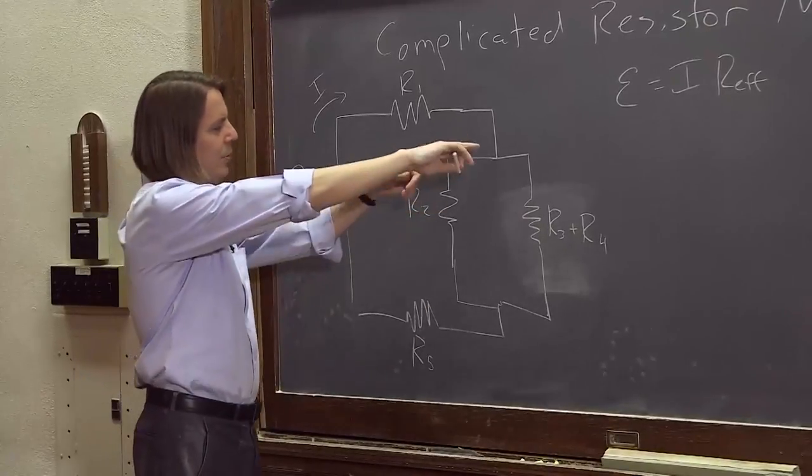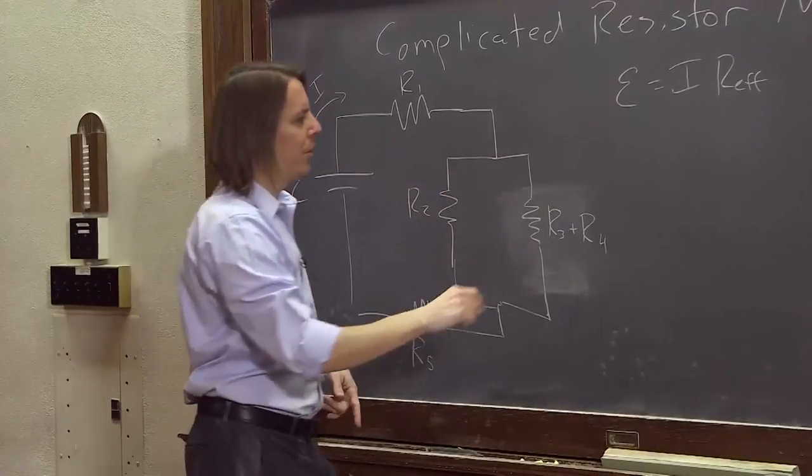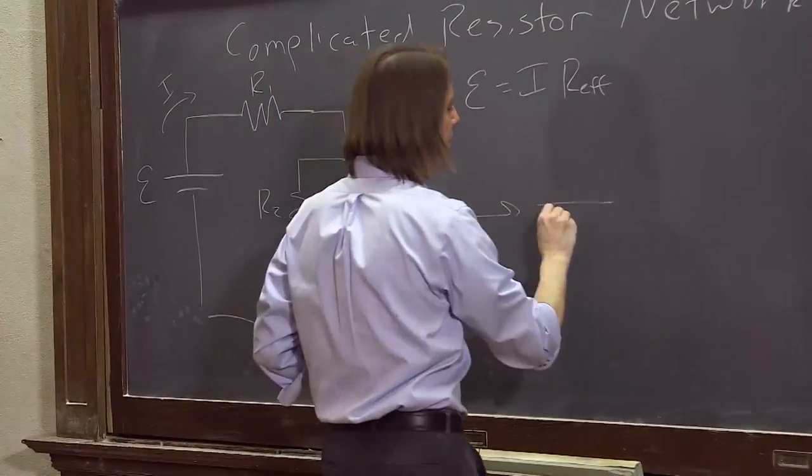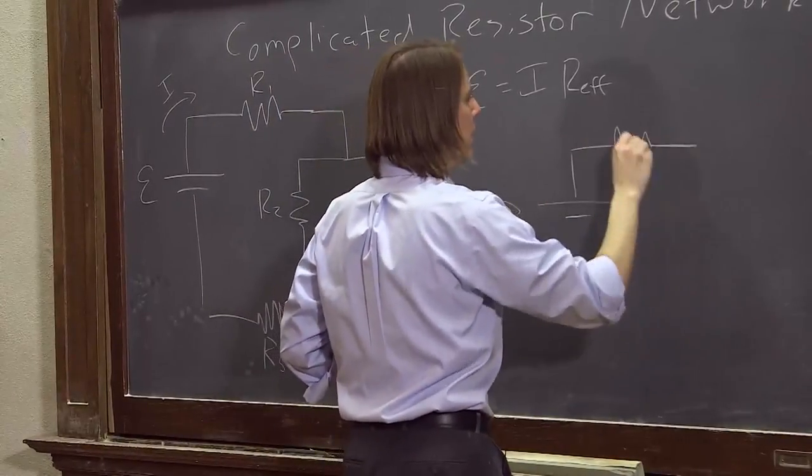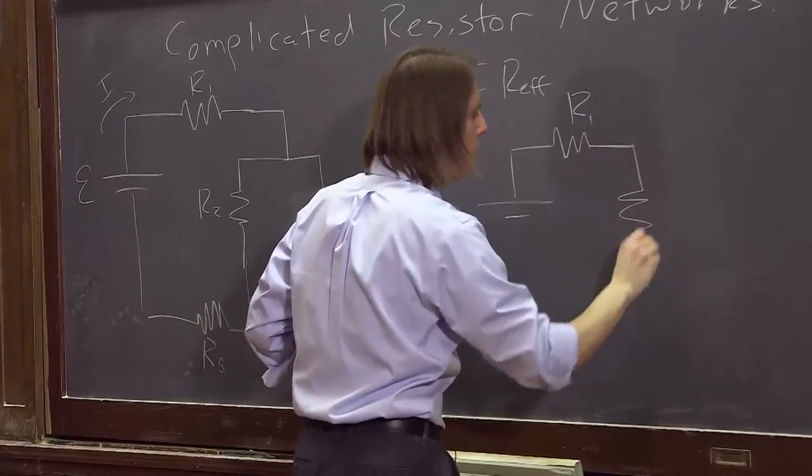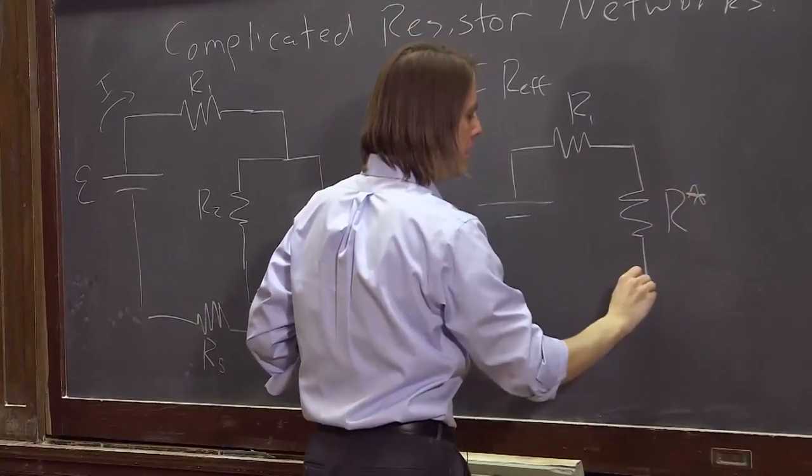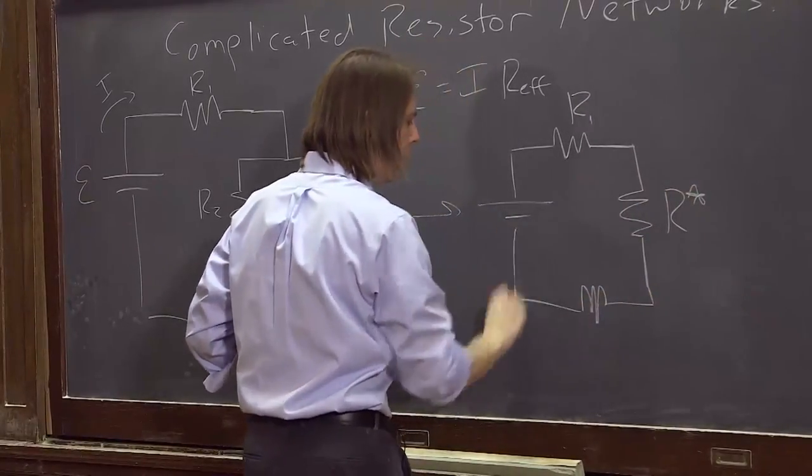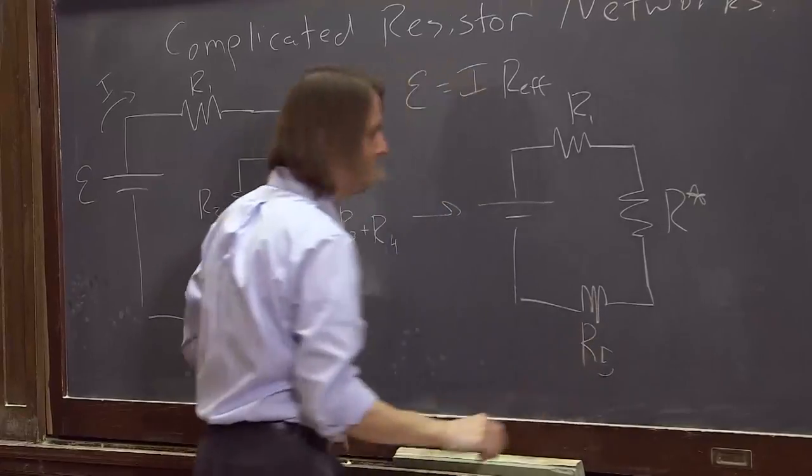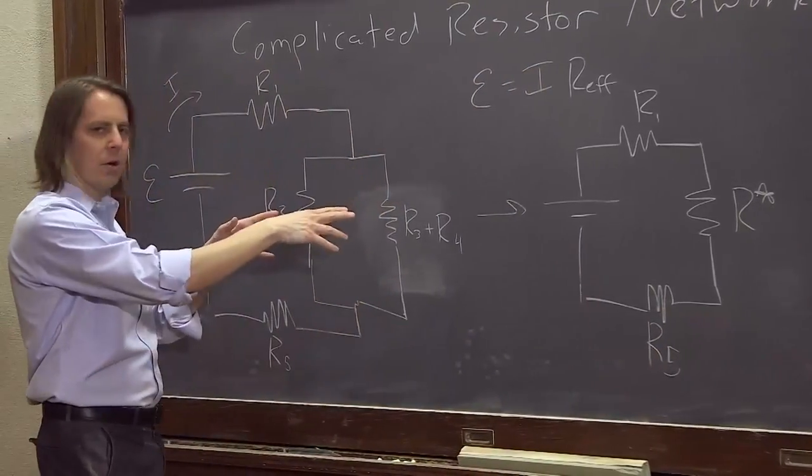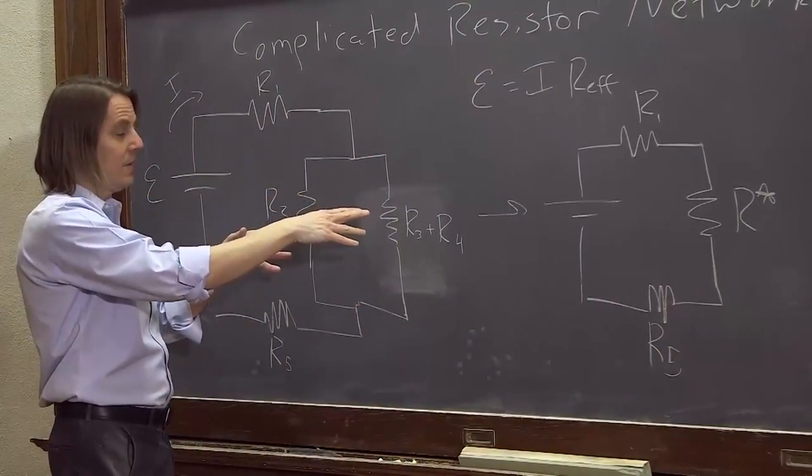And then you can see now we have just two resistors in parallel. So you can say this is really the same as R1 over R star, R5. We're going to replace R star with these two resistors in series.